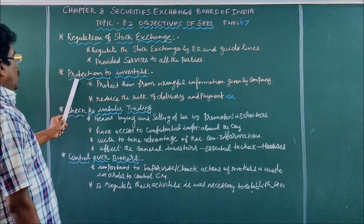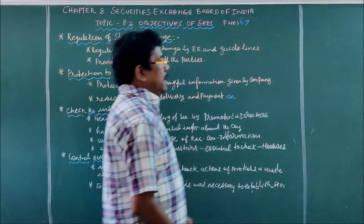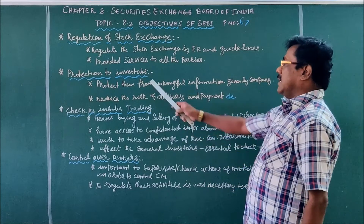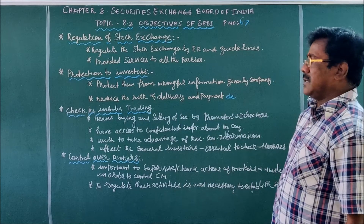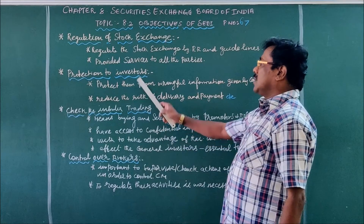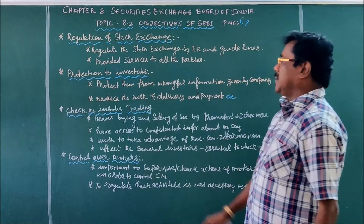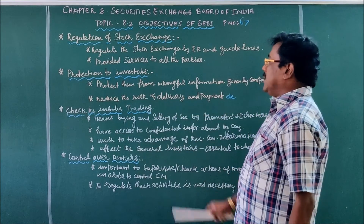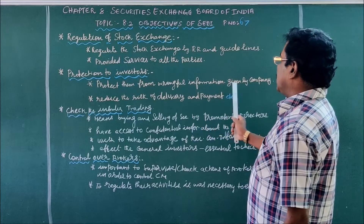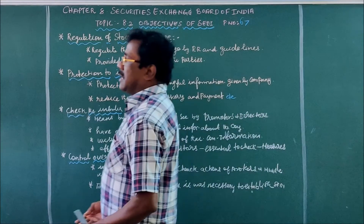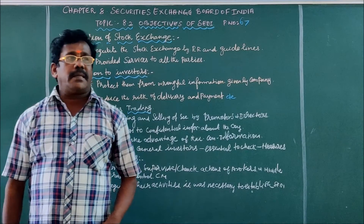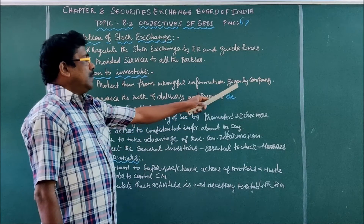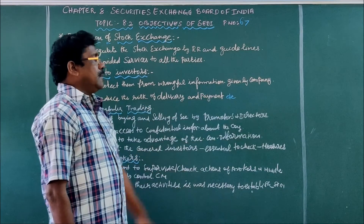The second objective is Protection to Investors. The functioning of the stock exchange is based only on the number of investors. When there are no investors, there is no stock exchange. That is to say, investors are the backbone of the stock exchange and they should be protected. Protection of investors from wrongful information given by companies is essential, as investors purchase and sell shares, debentures, and other securities based on information given by the company.